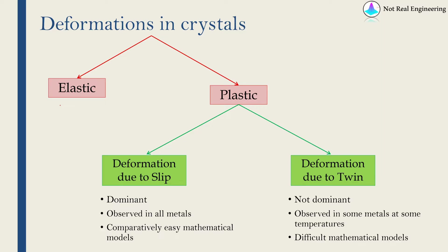There are always two types of deformations in a crystal. One is elastic deformation, in which if you remove the load, the crystal will go back to its original shape. And another is plastic or permanent deformation, where after removing load the crystal will retain its shape. Slip and twin are nothing but two types of plastic deformations.